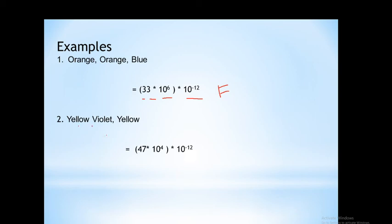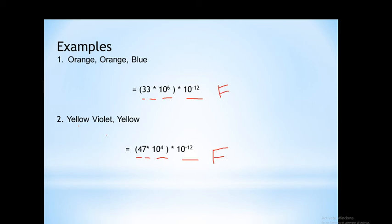The second example is yellow, violet, yellow. Yellow corresponds to 4, so the first significant digit is 4. Violet corresponds to 7, so the second significant digit is 7. Yellow again is the multiplier giving 10 to the power 4. Multiplying by 10 to the power minus 12, the result is 47 into 10 to the power minus 8, which converts to 470 nanofarad.